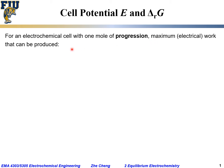The maximum electrical work that can be produced, W_max, would be E — the cell potential — times q, the total charge that passed between the two electrodes. So potential times charge gives us the electrical work performed, and the maximum would be E times q.